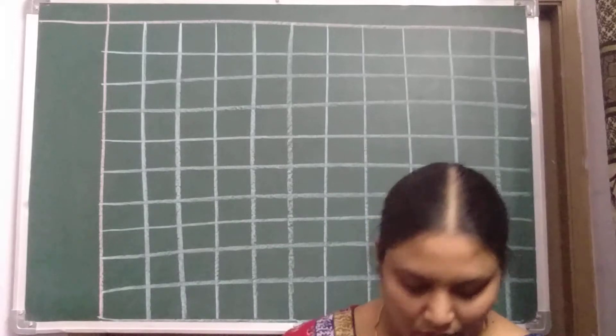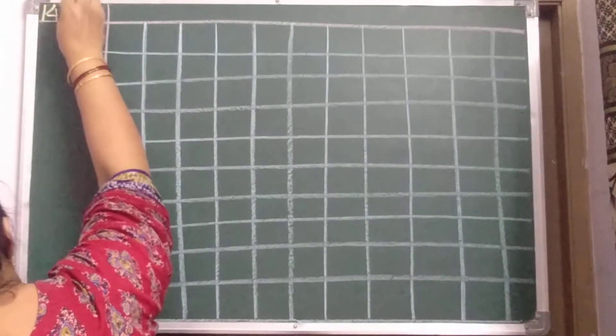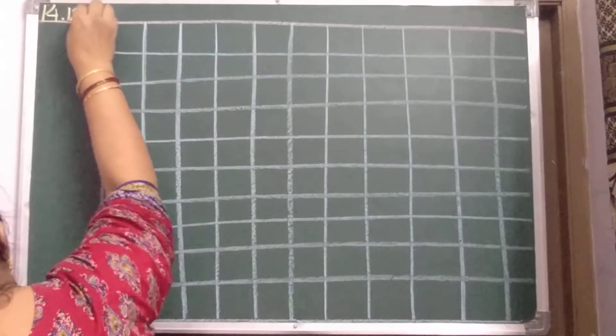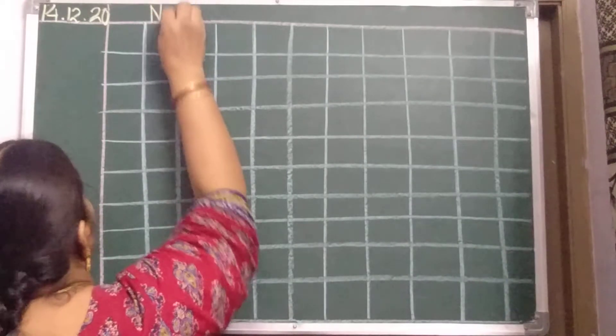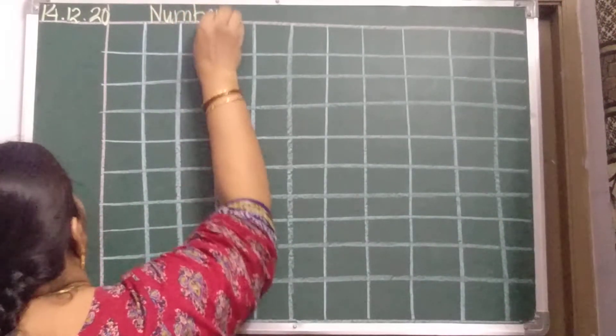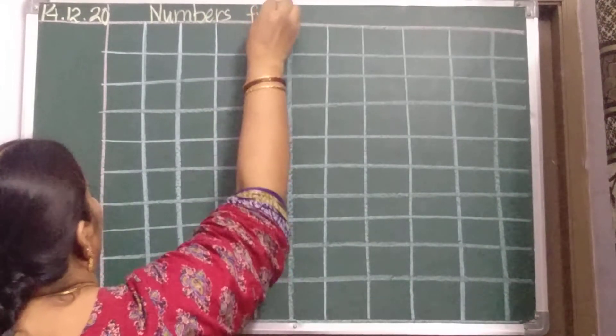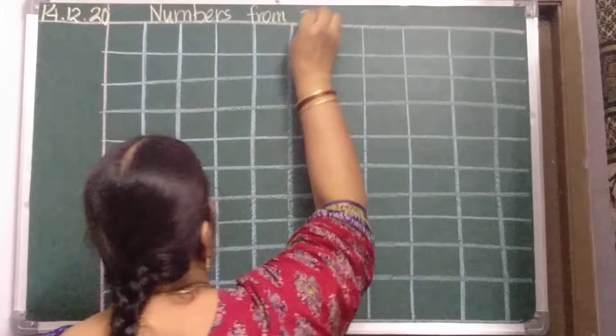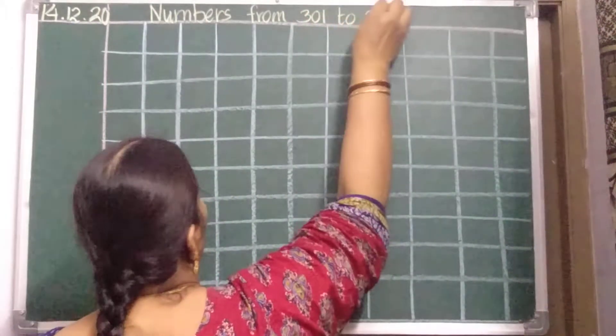Okay, ready with your number work notebooks. First of all, you should write the date here. Then on the top you should write the heading: Numbers, N-U-M-B-E-R-S, numbers from 301 to 350.